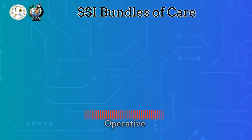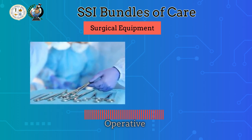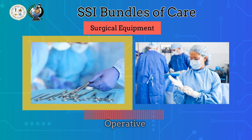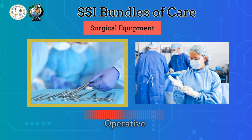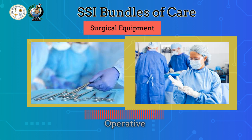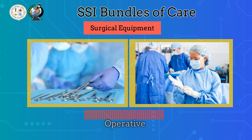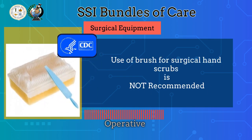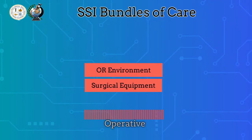Next in the operative phase, we have surgical equipment. This includes surgical instruments and sterile protective equipment. Surgical instruments can be sterilized by steam under pressure, dry heat, ethylene oxide, or other approved methods, and ensuring the integrity of instruments' sterility is vital. This goes with the personal protective equipment that healthcare workers will use. Before handling and wearing PPE, hand hygiene needs to take place. According to the Centers for Disease Control, use of a brush for surgical hand scrubs is not necessary, as scrubbing with a brush is associated with increased skin cell and bacteria shedding from the hands.